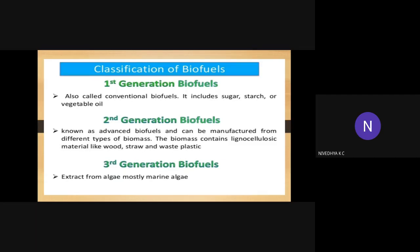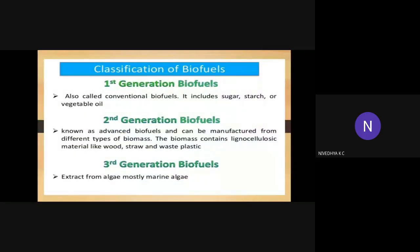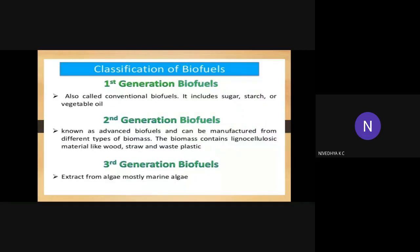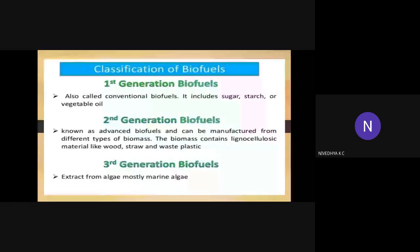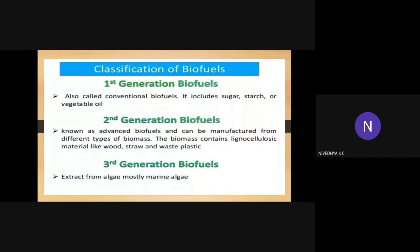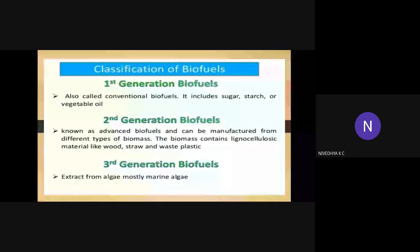Second-generation biofuels, known as advanced biofuels. They can be manufactured from different types of biomass. The biomass contains lignocellulosic material like wood, straw and waste plastic. The biofuels extracted from materials like wood, straw and waste plastics are called second-generation biofuels. Another name for second-generation biofuels is advanced biofuels.